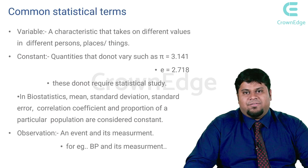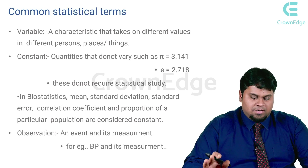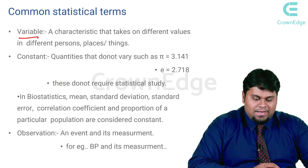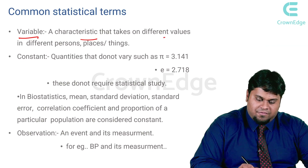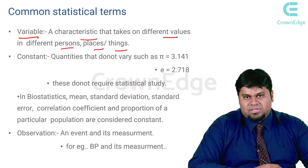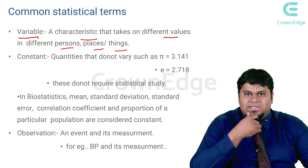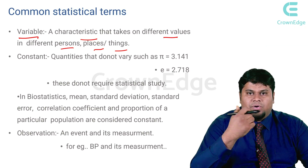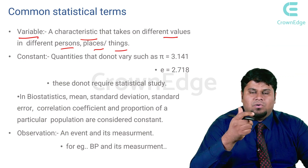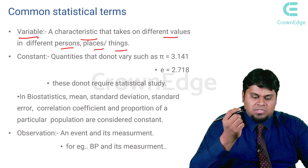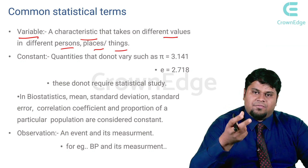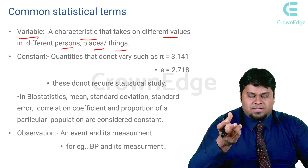Let's get familiar with certain common statistical terms. First and foremost, what is a variable? A variable is a characteristic that takes on different values in different persons, places, and things. For example, the amount of salivary proteins, the amount of fluoride in the saliva, or the amount of secretions from a certain gland. Anything can be considered a variable, and it is bound to take different values in different persons and different places.